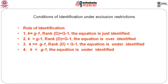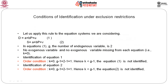The order condition is necessary but not sufficient. What we need in addition is the rank condition, because even if k is greater than or equal to g minus 1 — meaning the order condition is satisfied — if rank of D is less than g minus 1, the equation is still under-identified. So even if the order condition holds, unless the rank condition is also satisfied, identification fails.